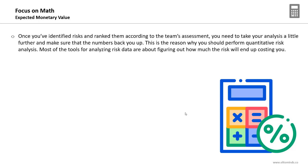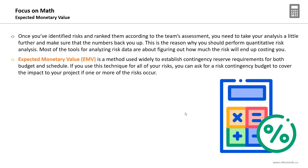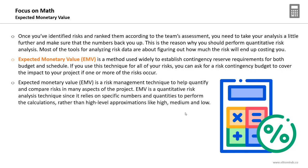Most tools for analyzing risk data are about figuring out how much the risk will end up costing you. The Expected Monetary Value (EMV) is a method used widely to establish contingency reserve requirements for both budget and schedule. It provides a scientific method of determining the exact required contingency reserves for your project. If you use this technique for all of your risks, you can ask for a risk contingency budget to cover the impact if one or more identified risks occur. EMV is a quantitative risk analysis technique since it relies on specific numbers.